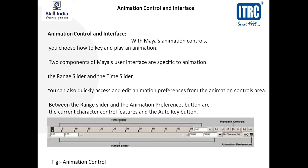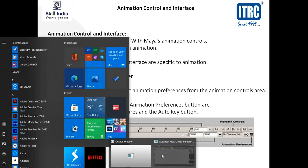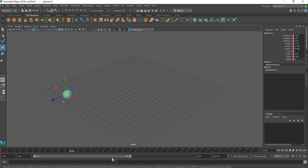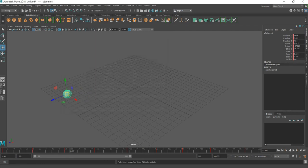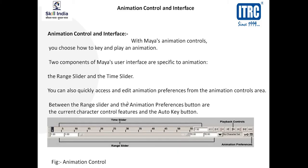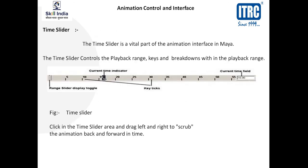This is the animation control: Time Slider, Range Slider, Playback Controls, and Animation Preferences, which we have seen in Maya software. This is our Time Slider — this is where starting and end positions are defined. This is our Range Slider. Where we have set the frame rate, this is the Preferences option. In Maya, we can change our animation with the help of Time Slider, Range Slider, and Preferences.